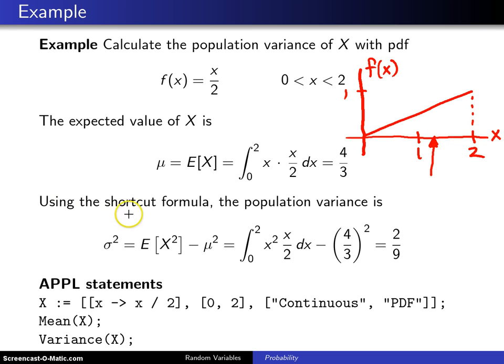Now the next thing we want to do is use the shortcut formula to find the population variance. Sigma squared, which is the variance of x using the shortcut formula, is the expected value of x squared minus the expected value of x squared. So first of all for the expected value of x squared,